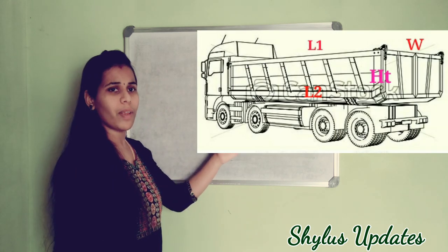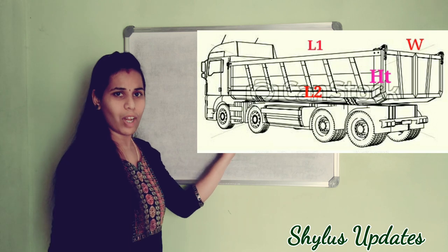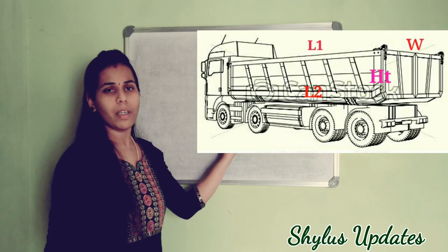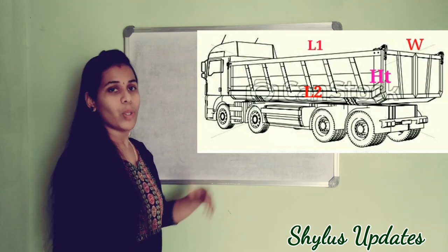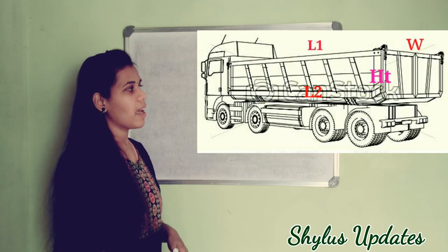In this picture, you can see the width of the lorry, W. You have to measure all those dimensions.